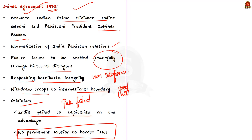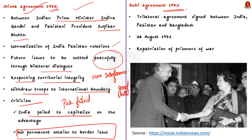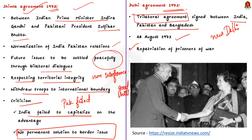The Delhi Agreement was signed on 20th August 1973 — a trilateral agreement between India, Pakistan and Bangladesh signed by their respective foreign ministers in New Delhi after the Shimla Agreement. It allowed the repatriation of prisoners of war and officials held in the three countries after the 1971 Bangladesh Liberation War.